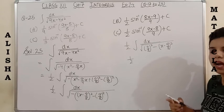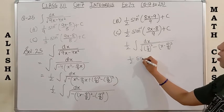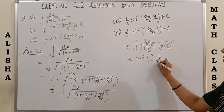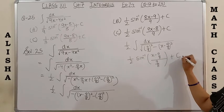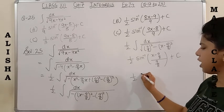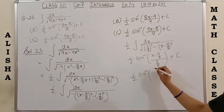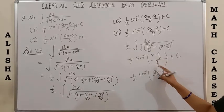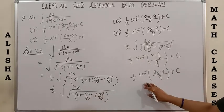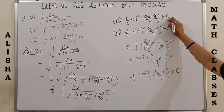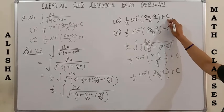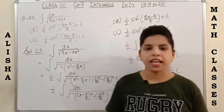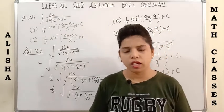This is of the form 1/√(a²-x²), whose formula is sin⁻¹(x/a) + C. Here a = 9/8. Taking LCM in the numerator gives (8x-9)/9. After simplification, 8 cancels with 8. The final answer is (1/2) sin⁻¹[(8x-9)/9] + C, which corresponds to option B.